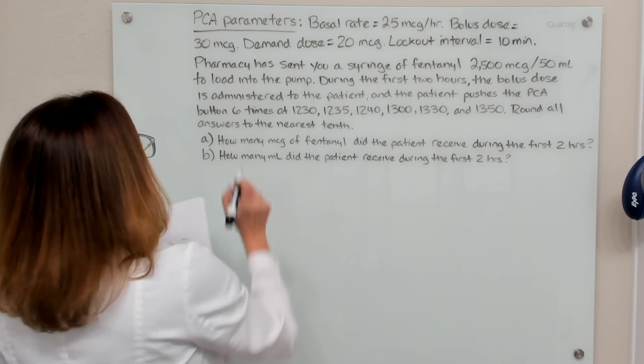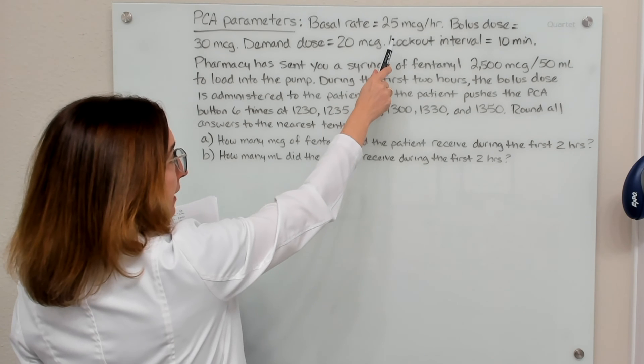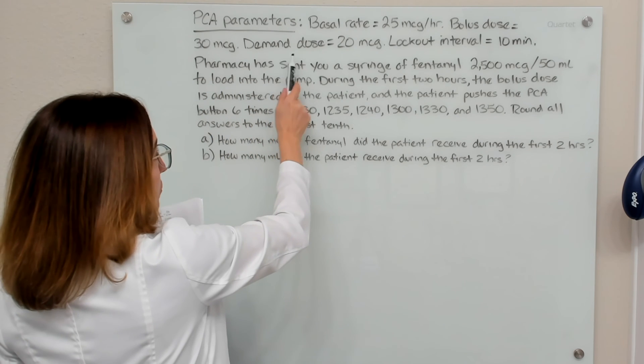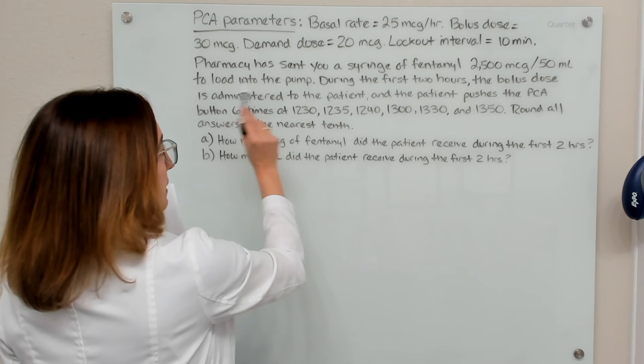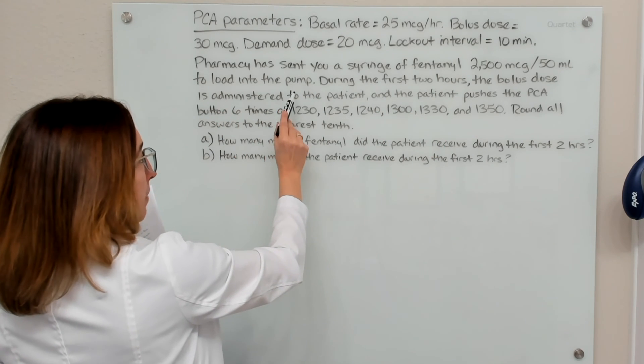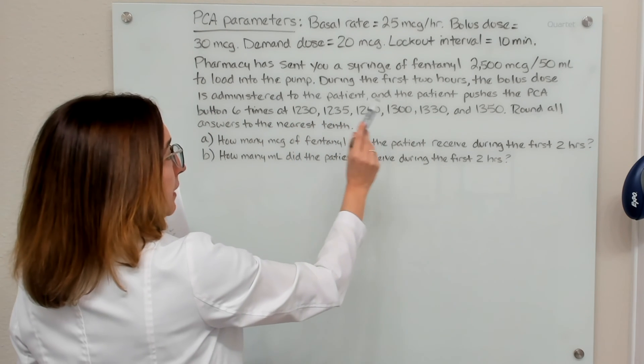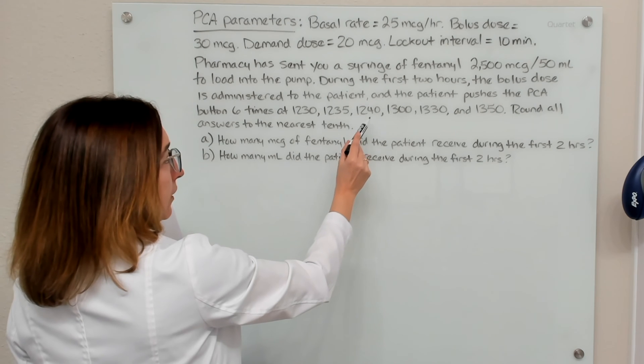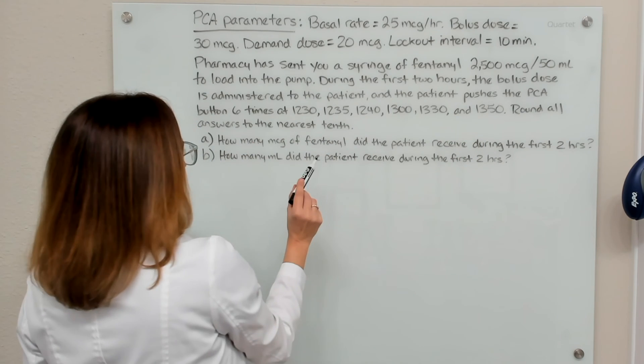In this problem, we have a patient with the following PCA parameters: a basal rate of 25 micrograms per hour, a bolus dose of 30 micrograms, a demand dose of 20 micrograms, and a lockout interval of 10 minutes. Pharmacy has sent us a syringe of fentanyl, 2500 micrograms in 50 mLs of solution to load into the pump. During the first two hours, the bolus dose is administered to the patient, and the patient pushes the PCA button six times at 12:30, 12:35, 12:40, 1:00, 1:30, and 1:50. We need to round all our answers to the nearest tenth.